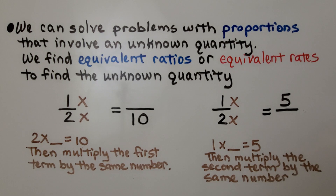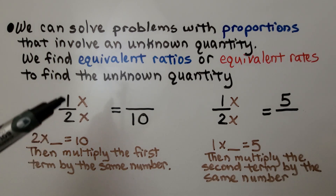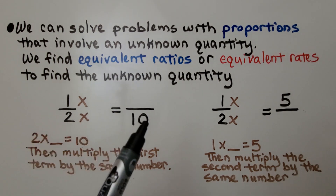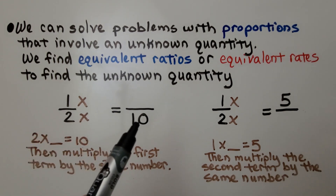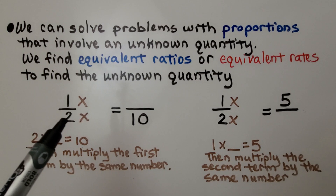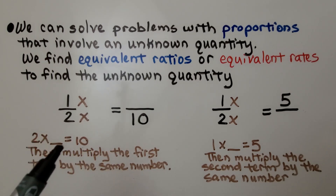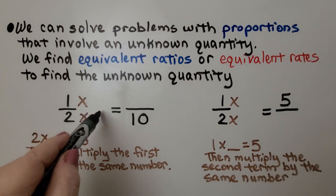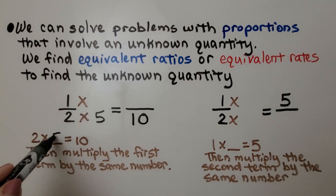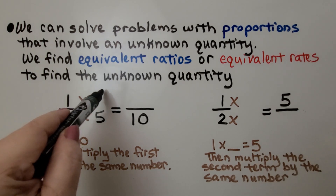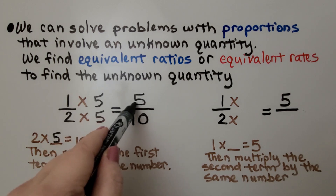We can solve problems with proportions that involve an unknown quantity. We find equivalent ratios or equivalent rates to find the unknown quantity. We have one half, and the information we're given is that the denominator is ten. We need to turn this two into a ten — two times some number equals ten, and that would be five. Then we multiply the first term by the same number, giving us five-tenths.